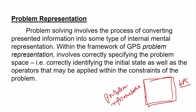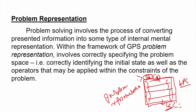Problem representation involves defining the boundaries of this problem space. It also leads us to identifying what is the initial state — where is the problem starting — and where is the goal state. Basically, identifying the initial state (IS) and the goal state (GS): what will the problem look like at the initial state and what will it look like at the goal state? Problem representation also involves finding out the constraints.